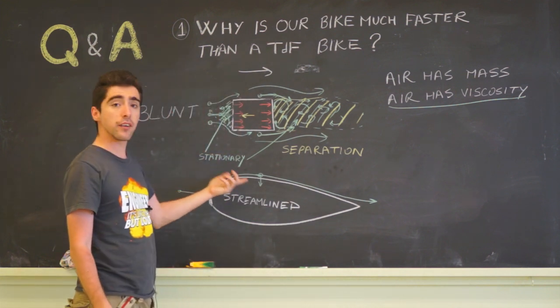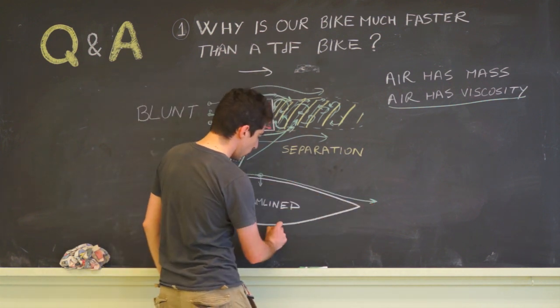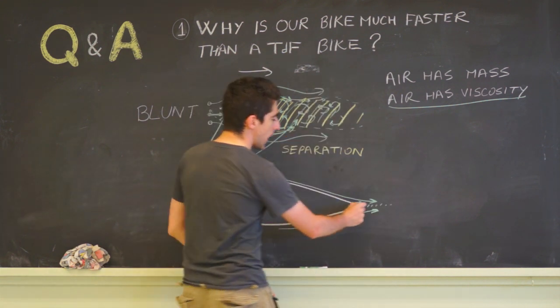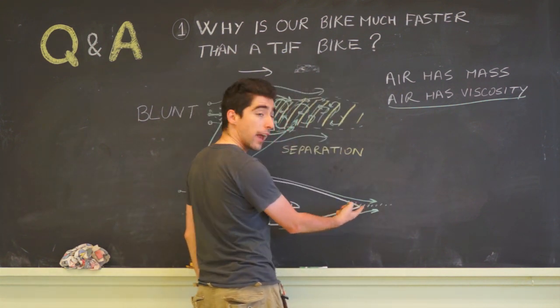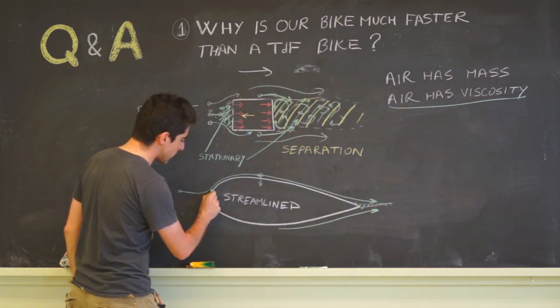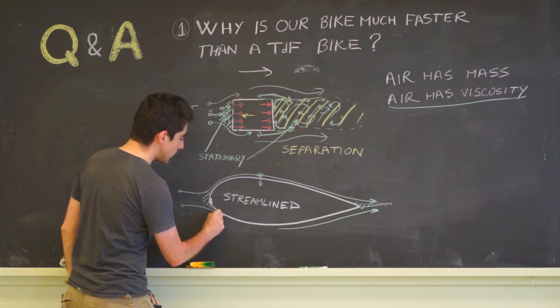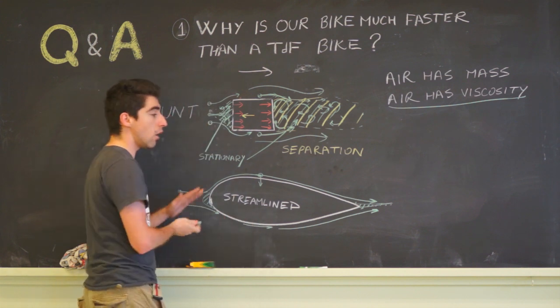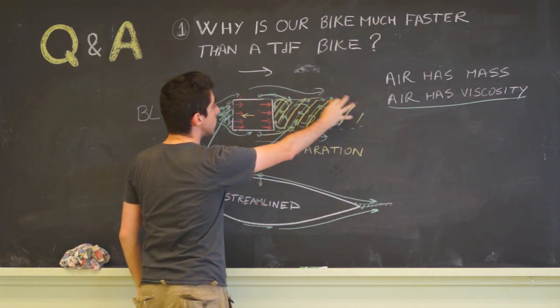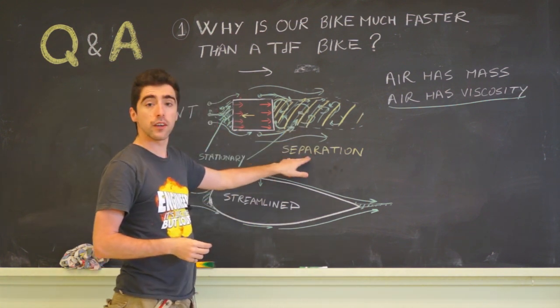A streamlined object is one where the particle of air is able to follow the contour very closely. We still have here a small region of air that's stationary with respect to the object as well as a small region right at the front. But the rest of the air travels along the skin of the object instead of having these big stationary regions. So a streamlined object shows no separation.